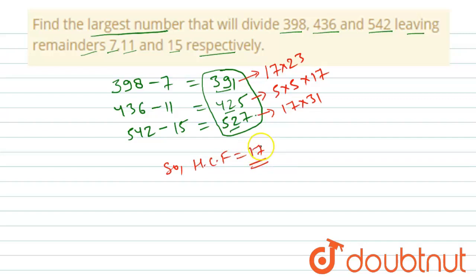So 17 is the largest number which divides the given three numbers with these respective remainders. So 17 is our answer. Thank you.